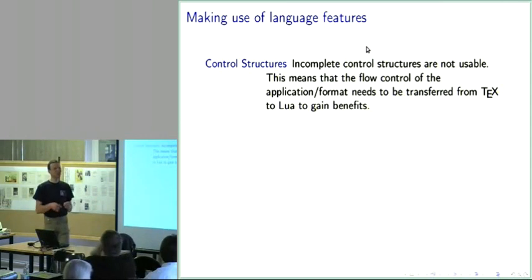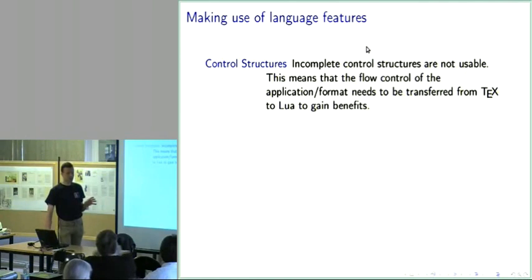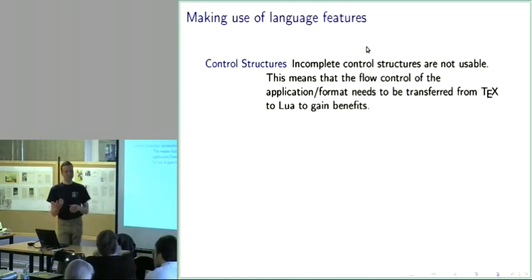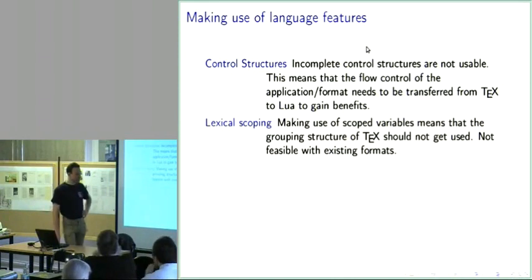It may be that coroutines offer some ways around this — where a Lua control structure yields for a while, lets TeX work, then resumes. I still have to check out how well this interaction between TeX and coroutines will work. But basically, if you want to get the benefits, you have to turn your problem description inside out, like a glove, have Lua on the other side, and transfer complete control outside to Lua, leaving nothing for TeX.